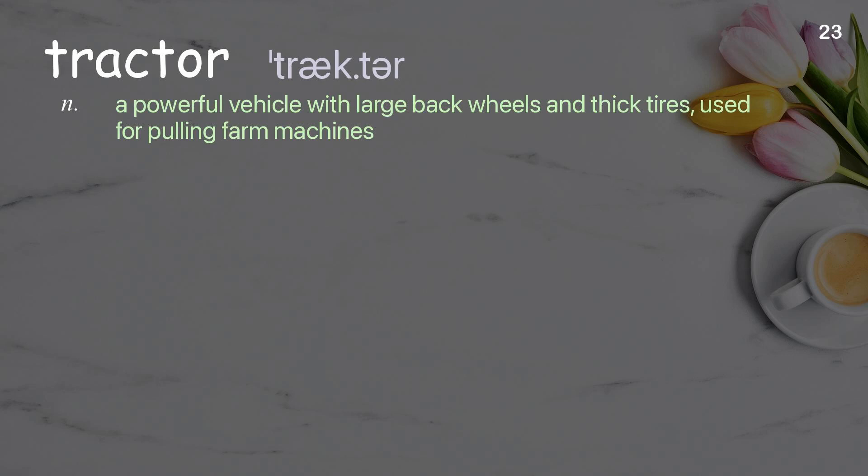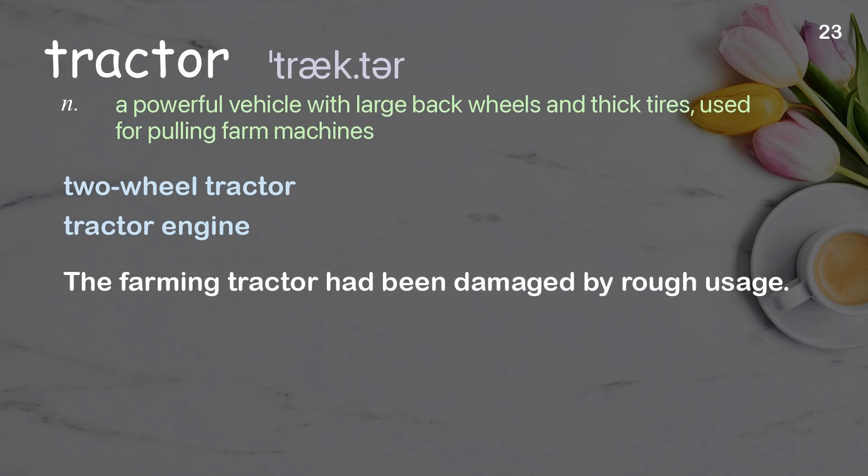Tractor: a powerful vehicle with large back wheels and thick tires used for pulling farm machines. Examples: two-wheel tractor, tractor engine. The farming tractor had been damaged by rough usage.